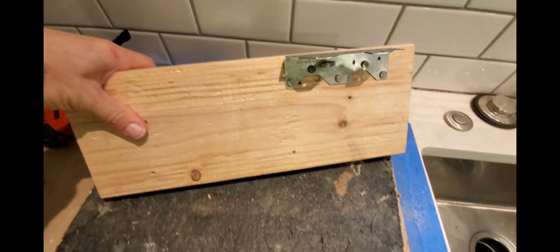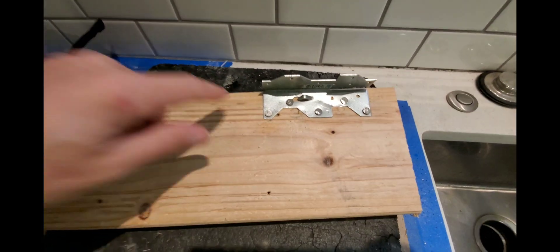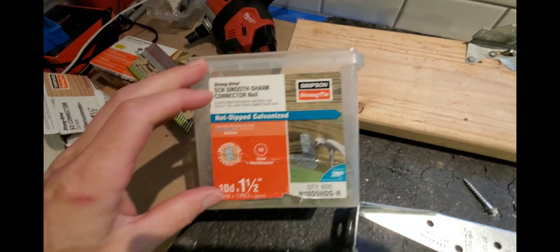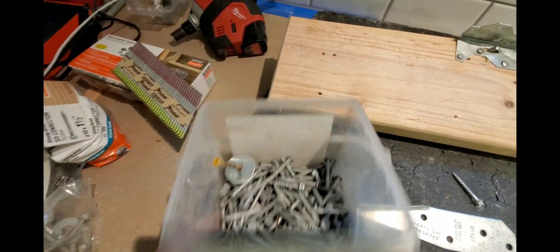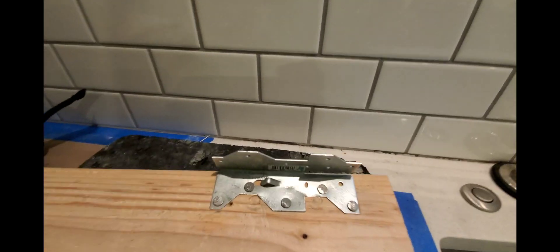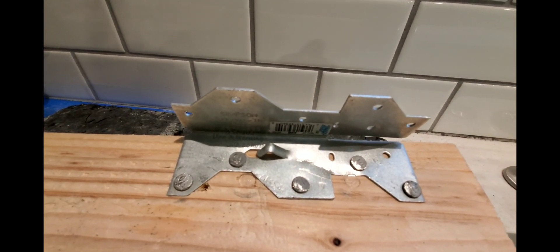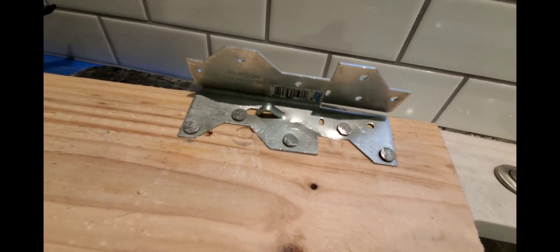We've got our block. We pre-nailed our A35s on, using our nails. These are the ones they want us to nail into the block. And then for the screws, you can use a half-inch number six. It doesn't say how many.